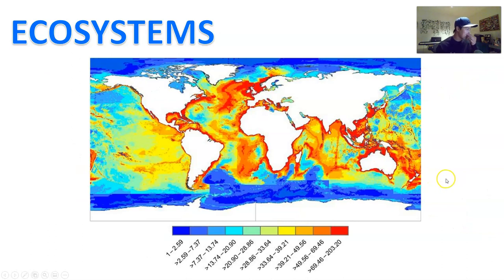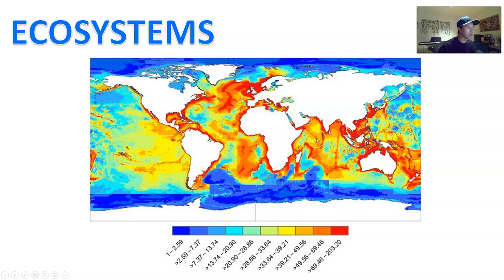Here is the aquatic species richness map. You can see the same general idea: around the tropics there is high species richness, and as you work your way towards the poles it drops quite dramatically. This one also follows the movement of nutrients in large oceanic currents across certain coastal areas.